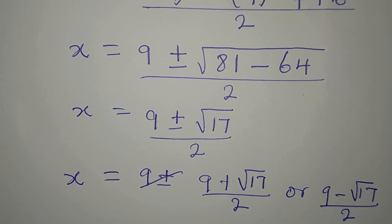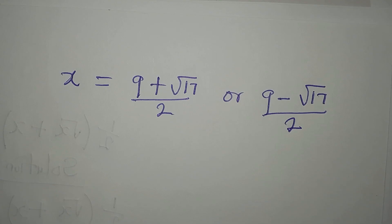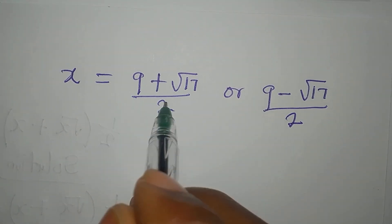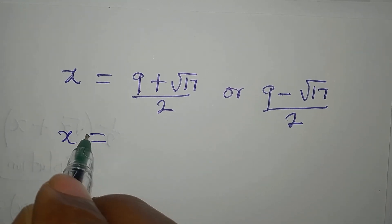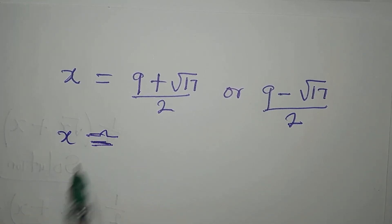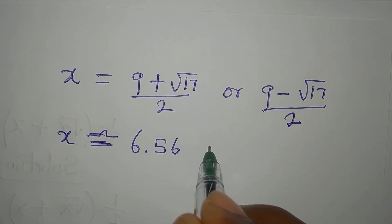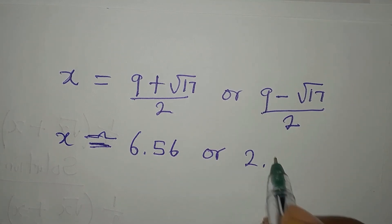We have two solutions to the problem, but the question is: can both of them satisfy the equation? The answer is no. Let's check which one should satisfy. Using a calculator, (9 plus root 17) over 2 is approximately 6.56, and (9 minus root 17) over 2 is approximately 2.44.